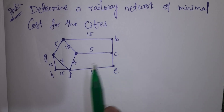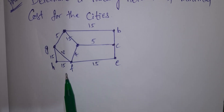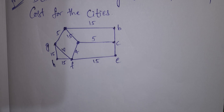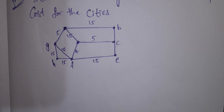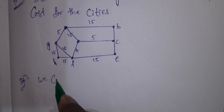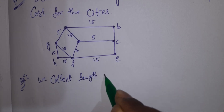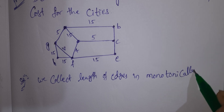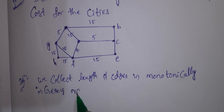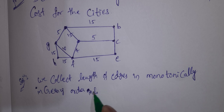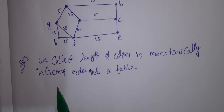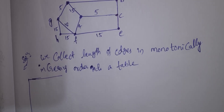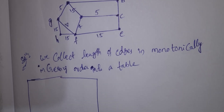The problem: determine the railway network of minimum cost for cities. We collect the length of edges in monotonically increasing order into a table. Let's put the table here — on one side is the edge and on the other side is the tree.